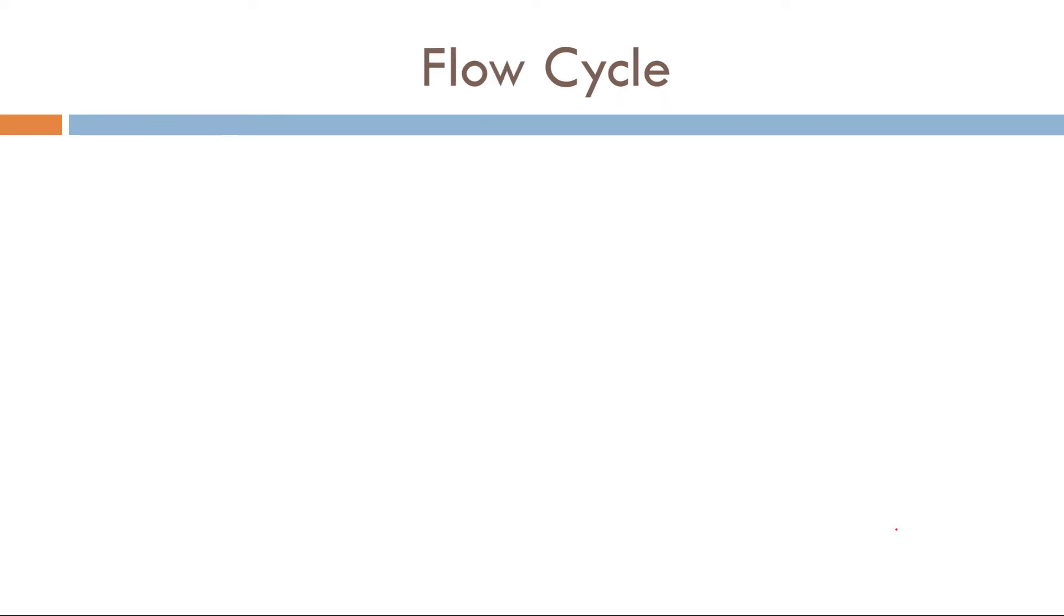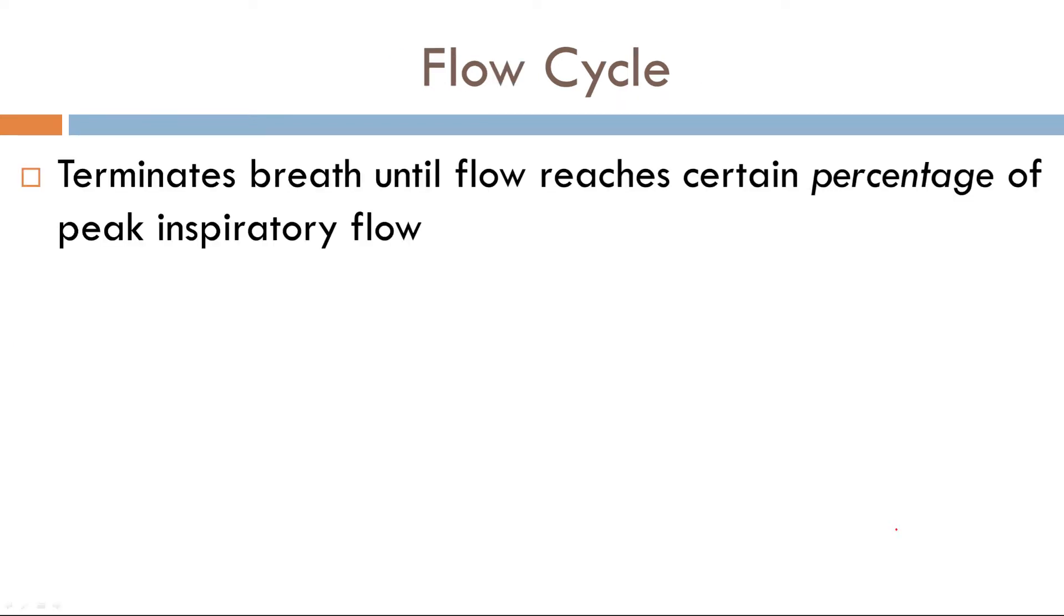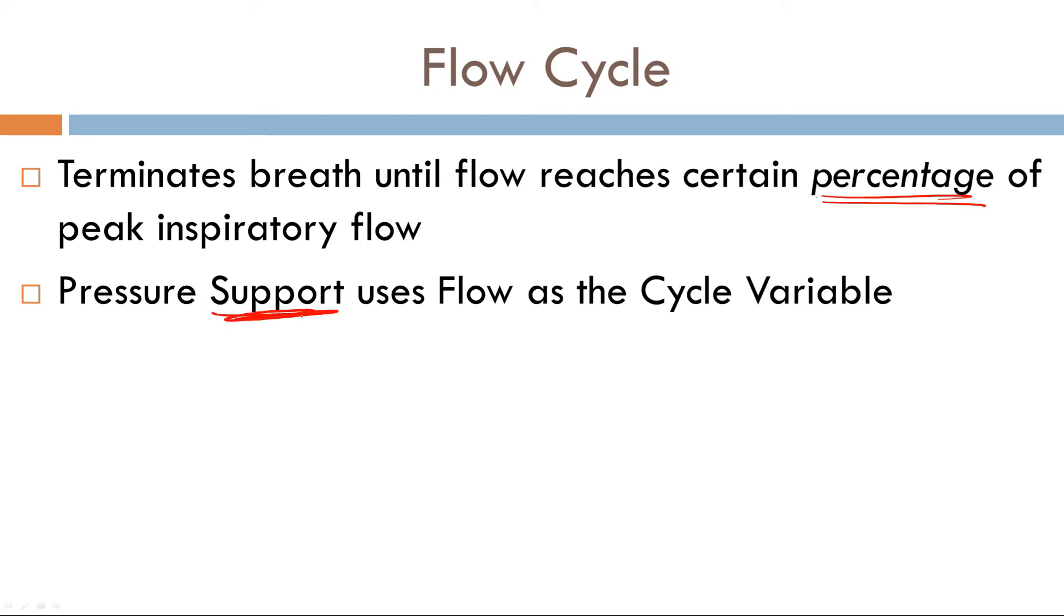Now flow cycle, this is the one that's a little bit more involved. Let's discuss it. Here's a definition. The vent will continue to deliver a breath until the flow reaches a certain percentage of the peak inspiratory flow. Now what mode of ventilation uses flow as the cycle variable? Pressure support, not pressure control. Pressure support ventilation uses flow as a cycle variable.